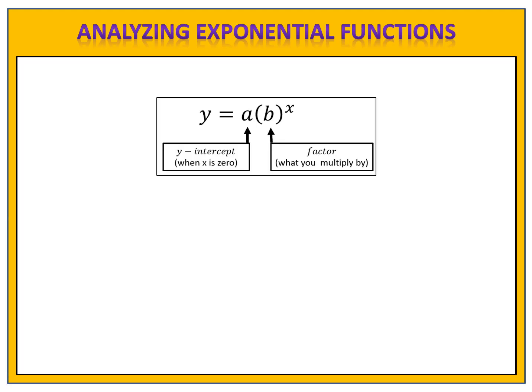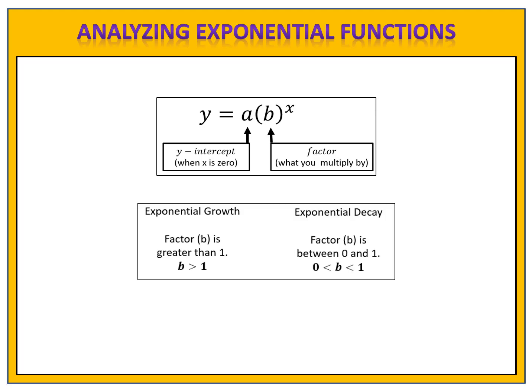We learned in a previous lesson that an exponential function has the form y equals a times b to the x, and we learned that the b value is the factor, or what we multiply by. If the factor is greater than 1, we have a function that exhibits exponential growth, and if the factor is between 0 and 1, we have a function that exhibits exponential decay.